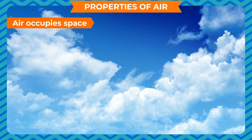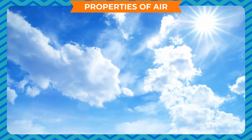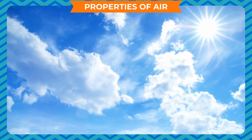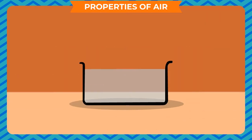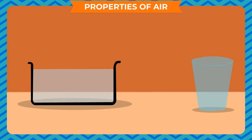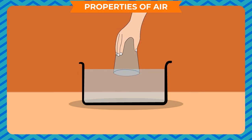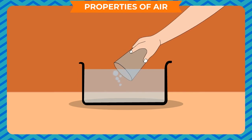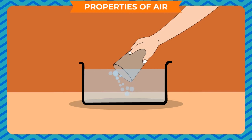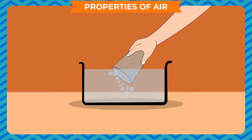Properties of air — air occupies space: air is everywhere around us. Although we do not see it, we can easily prove that air occupies space. Take a vessel full of water and take an empty glass. Hold the glass upside down so its opening touches the water, and push the glass slowly into water without tilting it. We will see that water does not enter the glass, because the air present in the glass is unable to come out. Now tilt the glass slowly in the water — bubbles of air start coming out and water starts entering the glass.